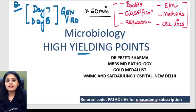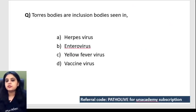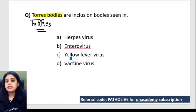Let's get going. I'm going to ask you two or three questions, then teach you all the bodies together. These are PYQs, so you're practicing a significant portion. First question: where do you see the Tories bodies? The way you write Tories has a double-R in it — you see it in an infection with a double-L in it. The answer is yellow fever virus. Tories bodies are seen in yellow fever.